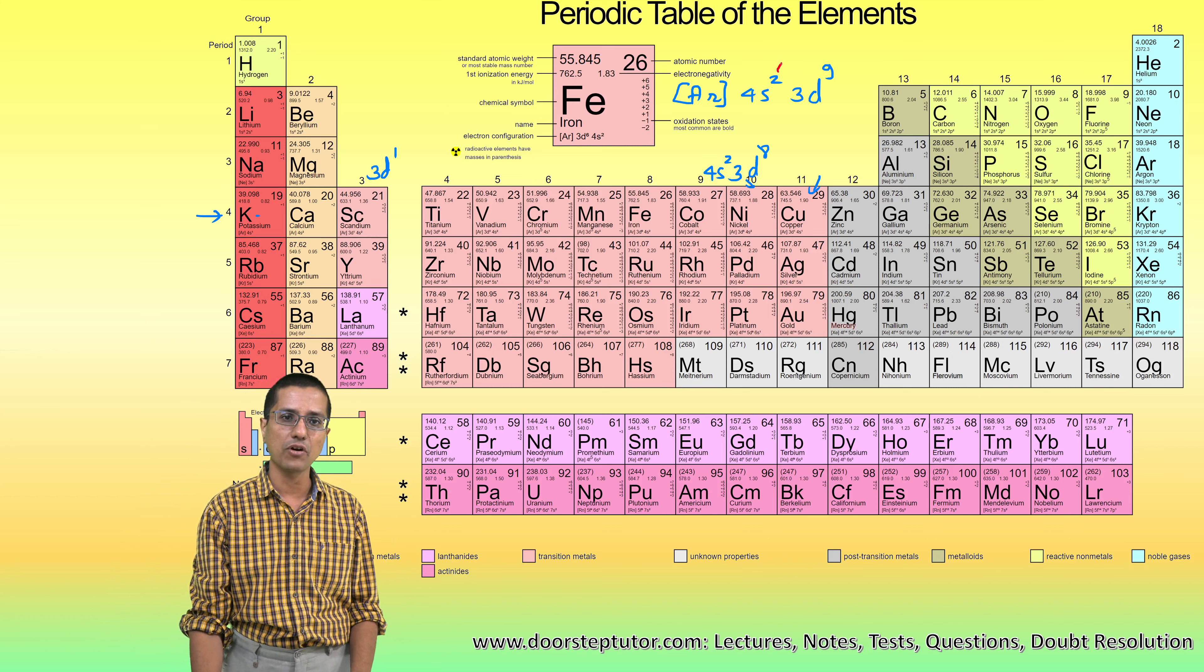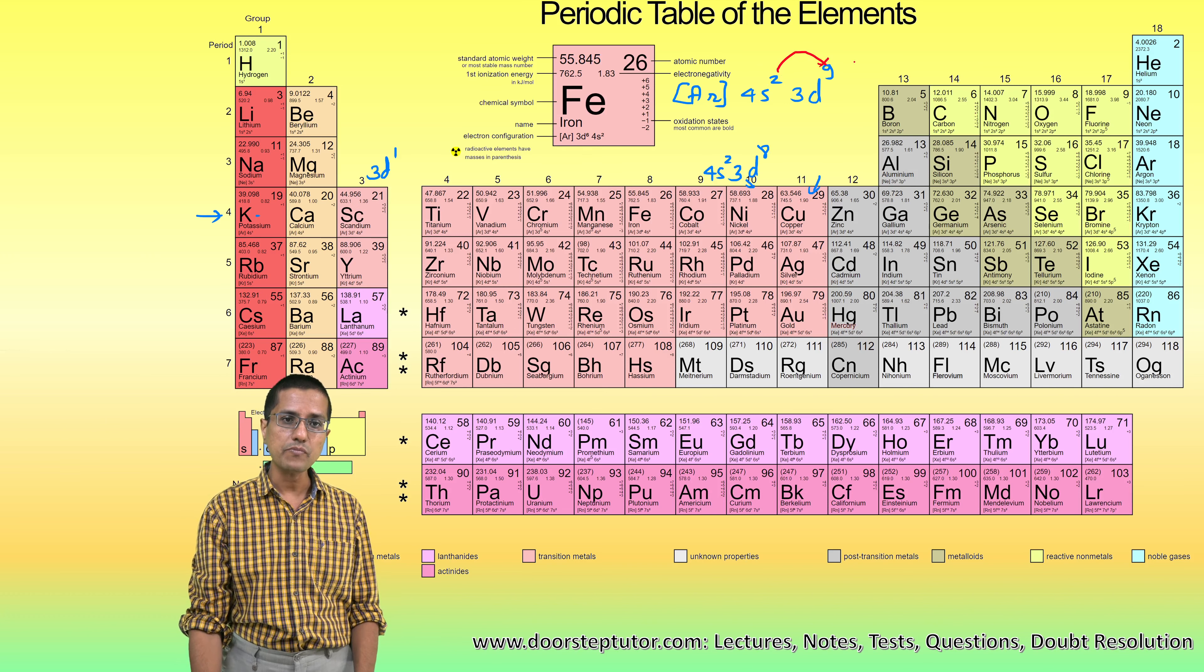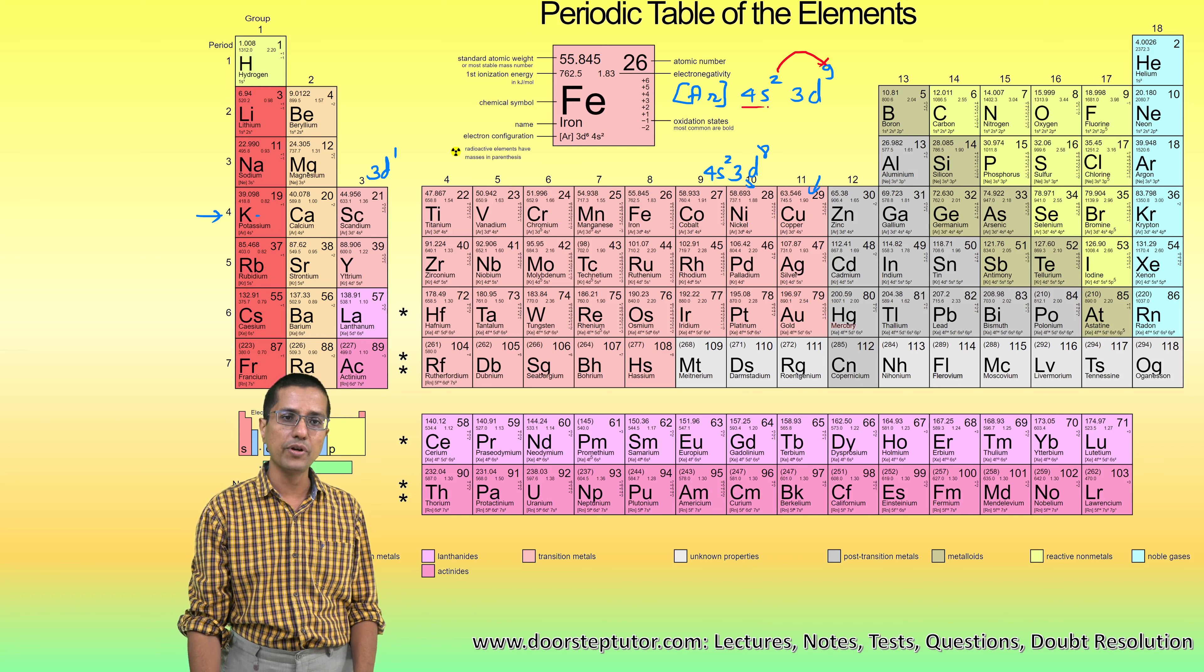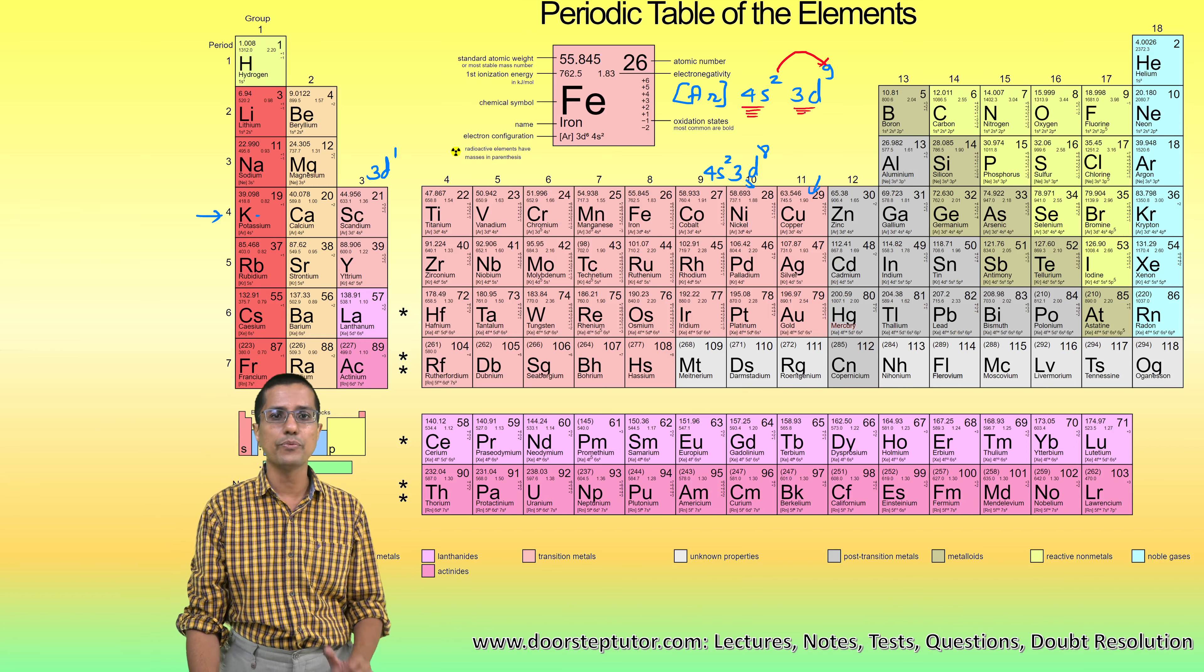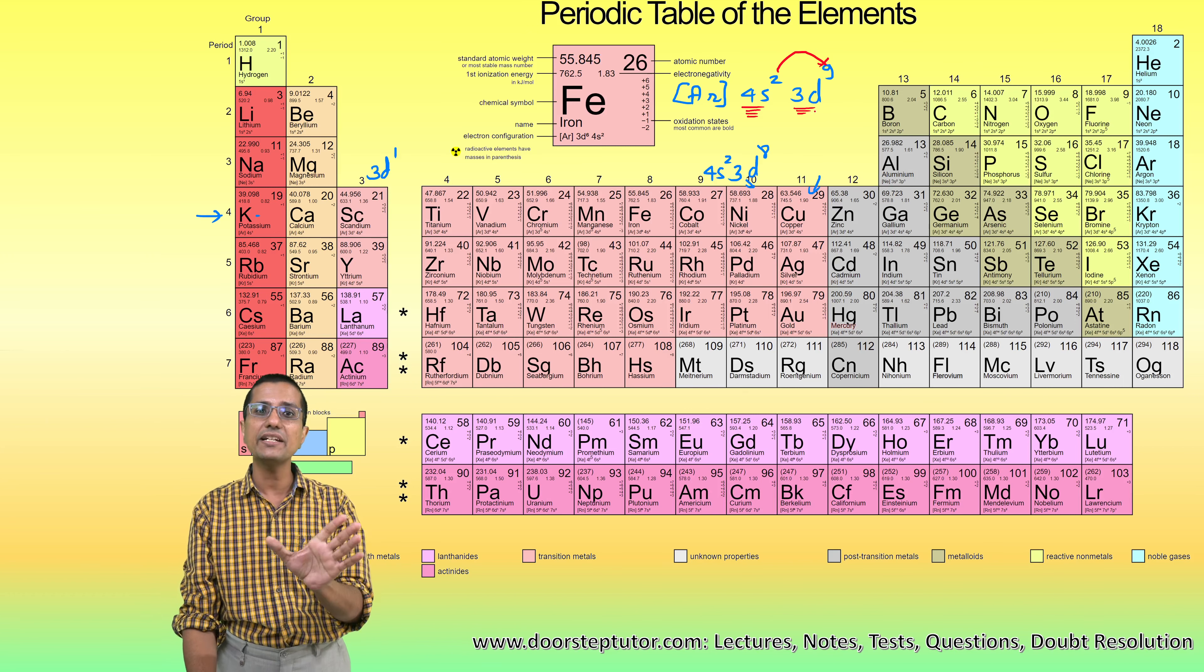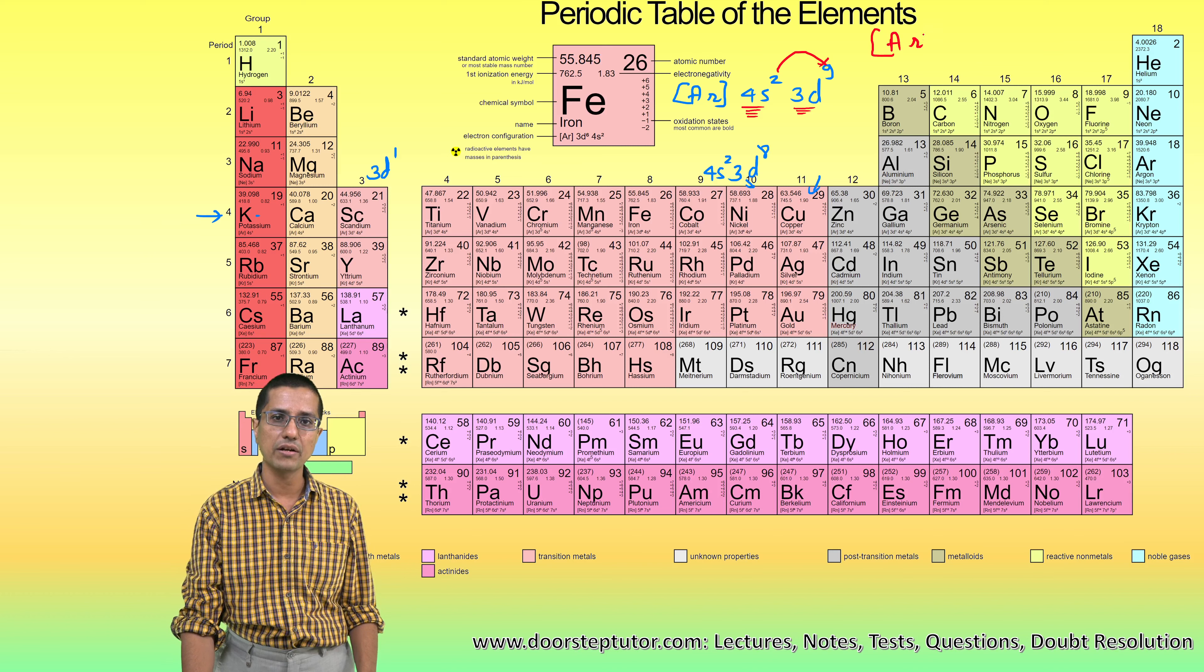In the case of copper, one electron actually jumps from this fully filled 4s sub-shell to the 3d sub-shell and makes it fully filled. So the electronic configuration is 4s¹, 3d¹⁰.